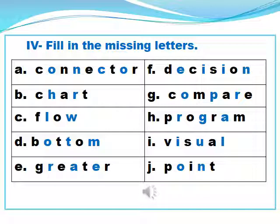The correct word is decision. The missing letters are G, O, P, R and the correct word is compare. The missing letters are R, G, A and the correct word is program.